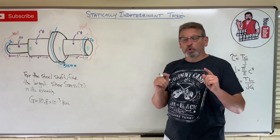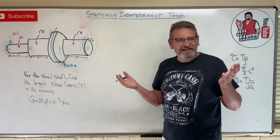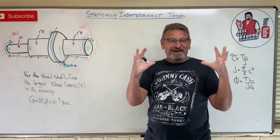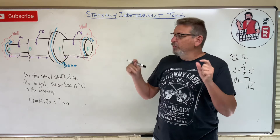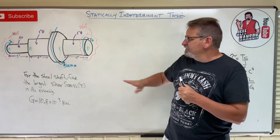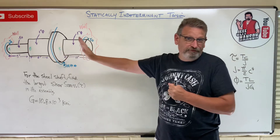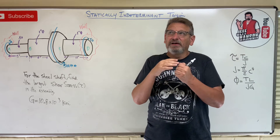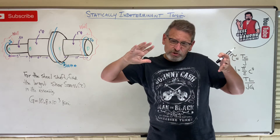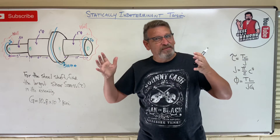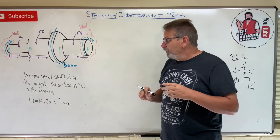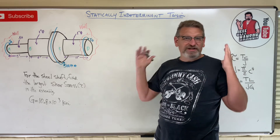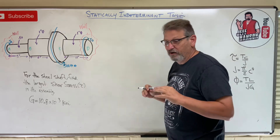Today we're talking about statically indeterminate torsion problems. What makes a problem statically indeterminate? That means we're going to have to look at the system and using logic, come up with some extra equations that we need to solve these problems. Typically you're going to see these when you have two walls and a shaft in between, or if you have something made out of two different materials that you're twisting but each one has to twist the exact same amount — those are statically indeterminate problems. Professors like these because the extra equations aren't in the book or on the equation sheet; they're in your brain.